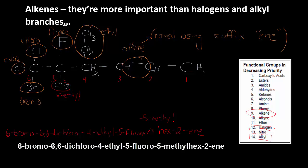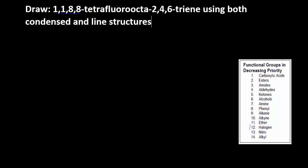I strongly encourage you to try it again — have the functional group list out with the priorities, and see if you can put it together. Circle the functional groups and all the branches so you know where they came from. Now let's draw one: 1,1,8,8-tetrafluoro-octa-2,4,6-triene using both the condensed and line structures.